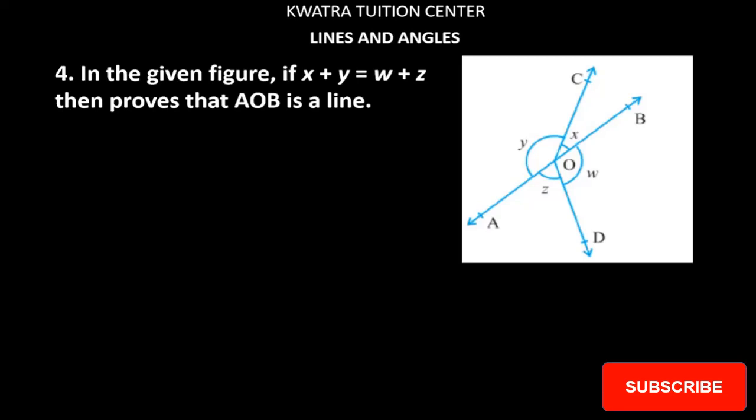Let's start with question number 4. It says x plus y is equal to w plus z. So this is given. This part which is given is that x plus y is equal to w plus z. These are the same and these are the same. They are both equal. This is given.